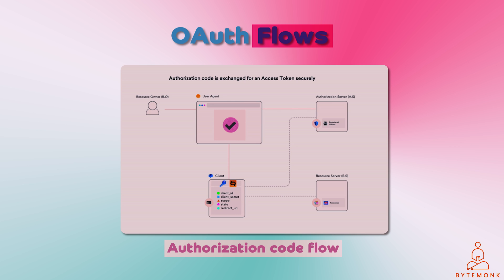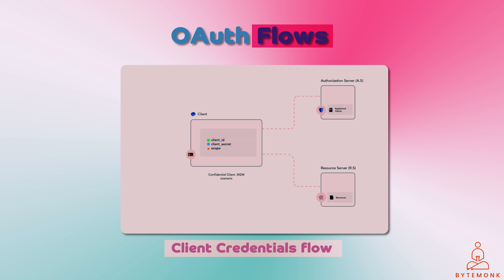The application can then use the access token to make requests to the resource server. Client credentials flow is used when the application does not access protected resources on behalf of a user — instead, the application needs to access its own protected resources. The application authenticates with the authorization server using its client ID and client secret, and the authorization server returns an access token the application can use to make requests to its resource server.